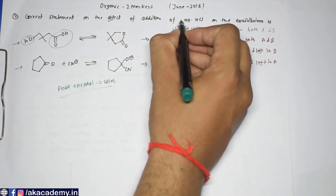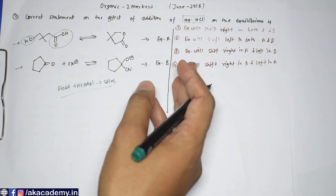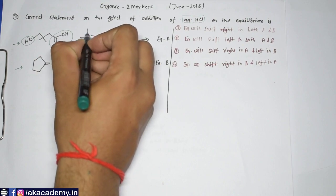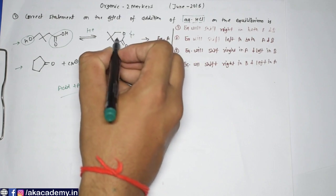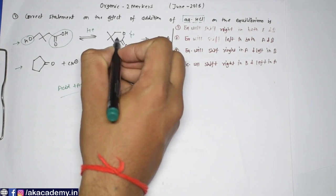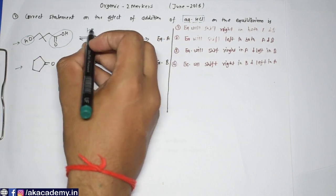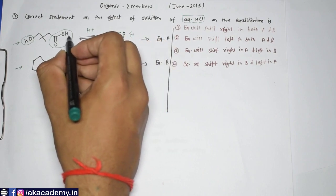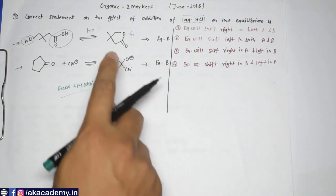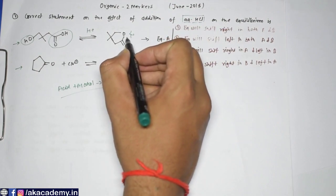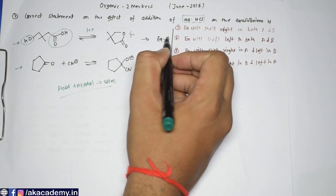If you use aqueous HCl, the reaction will proceed to the right-hand side. The H⁺ will drive this product to form. However, if we want to convert ester into alcohol or acid, both acid and base can be used — but to make ester from acid and alcohol, you only need acid. So the equilibrium will shift in the right direction.